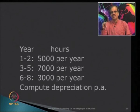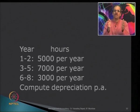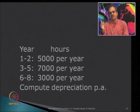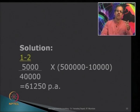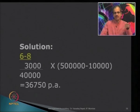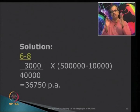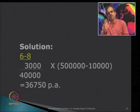According to the usage chart, initial 2 years see 5,000 hours, maximum use is between years 3 to 5 at 7,000 hours, and in the last years it tapers off to just 3,000 hours between years 6 and 8. Depreciation is calculated according to the actual use, which makes this a better method than the earlier two. The only disadvantage is that you need reliable estimates of the number of hours the machine is likely to be used.